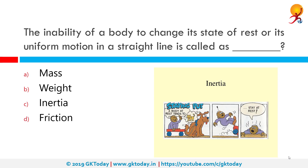The inability of a body to change its state of rest or its uniform motion in a straight line is called inertia. Inertia is the resistance of any physical object to any change in its velocity. This includes changes to the object's speed or direction of motion.